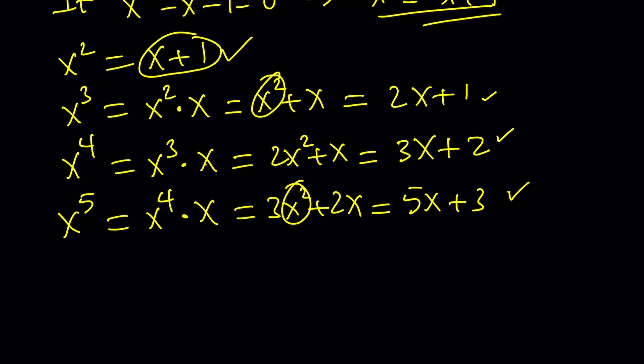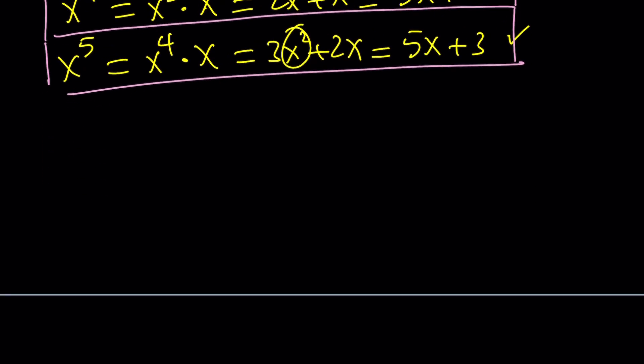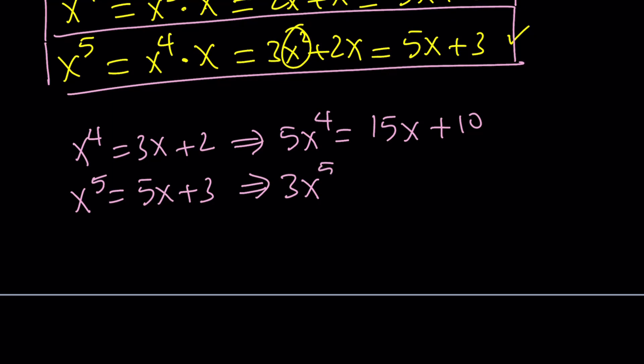This one, since we have a quintic, we're going to use this one and this one. Now, x to the 4th equals 3x plus 2. If you multiply both sides by 5, you get this. x to the 5th is 5x plus 3. By the way, this is for the initial x's we talked about. And it's going to be this one.